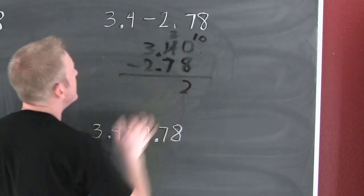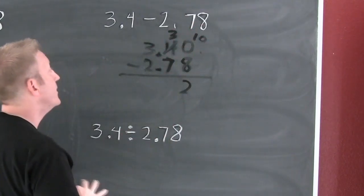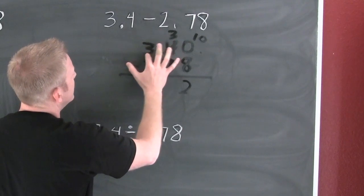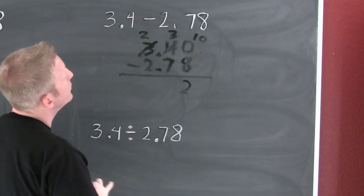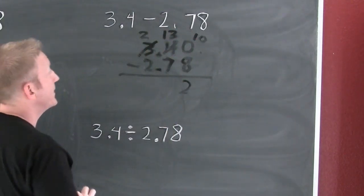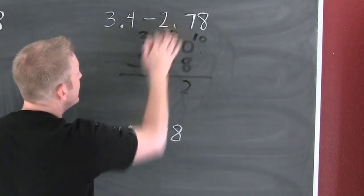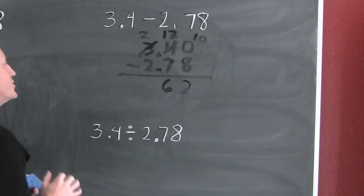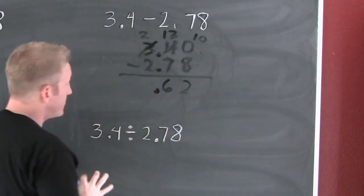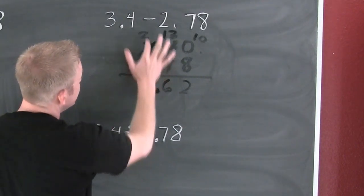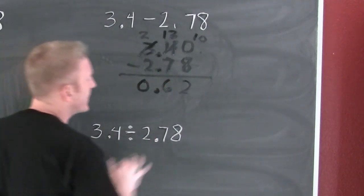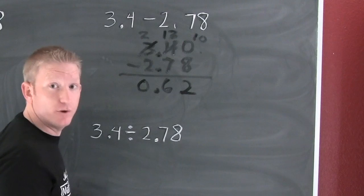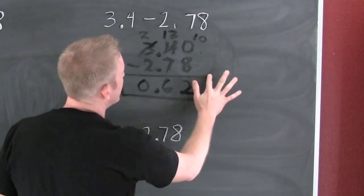Now, scary number 7 — can you take 7 from 3? No way. So 3 says, 'Hey 3, can I please have a tenth?' And the 3 is like, 'Yeah man, we're totally the same number.' So he's not a 3 anymore, now he's a 2, and that made him a 13. Can I take 7 from 13? That's going to be 6. Bring that decimal straight on down, because the most important part about adding and subtracting decimals is lining up the decimal place. Can I take 2 from 2? Yes — and I'm left with nothing. Is that positive or negative? Which number was bigger — 3.4 or 2.78? 3.4 is further to the right on the number line, so my resulting number is positive. The answer is 0.62.